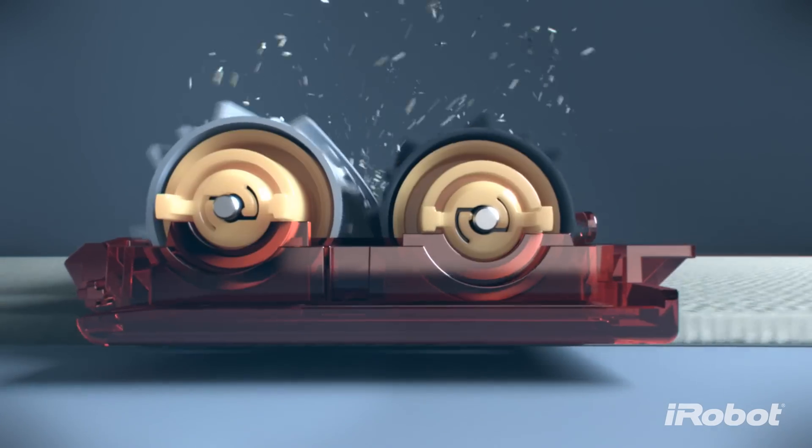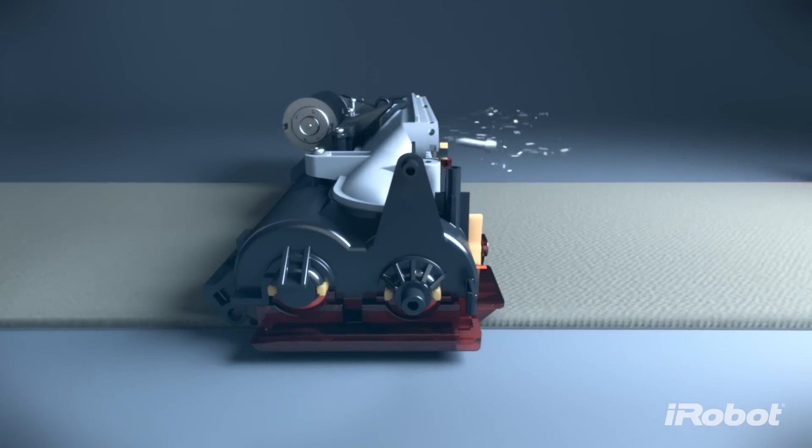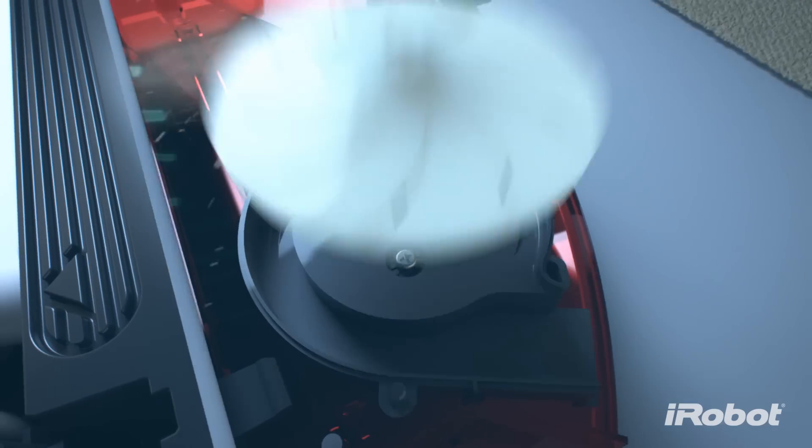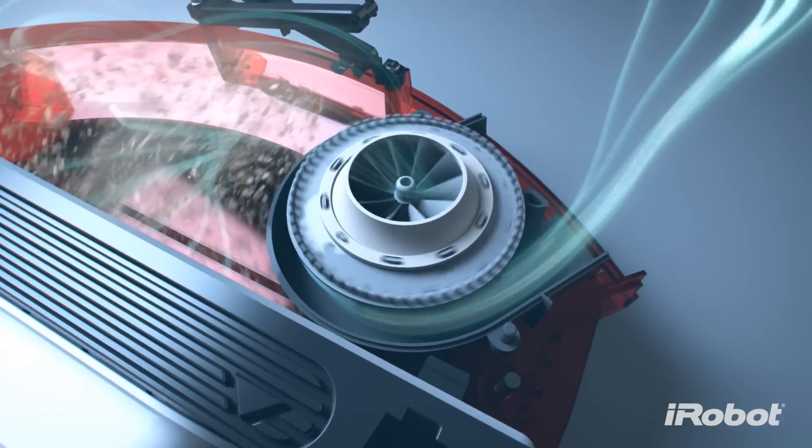The Airflow Accelerator brings the vacuum power right down to the floor surface, creating a sealed channel that concentrates the airflow and multiplies the vacuum power. The high-efficiency vacuum was custom-engineered to balance suction and airflow.